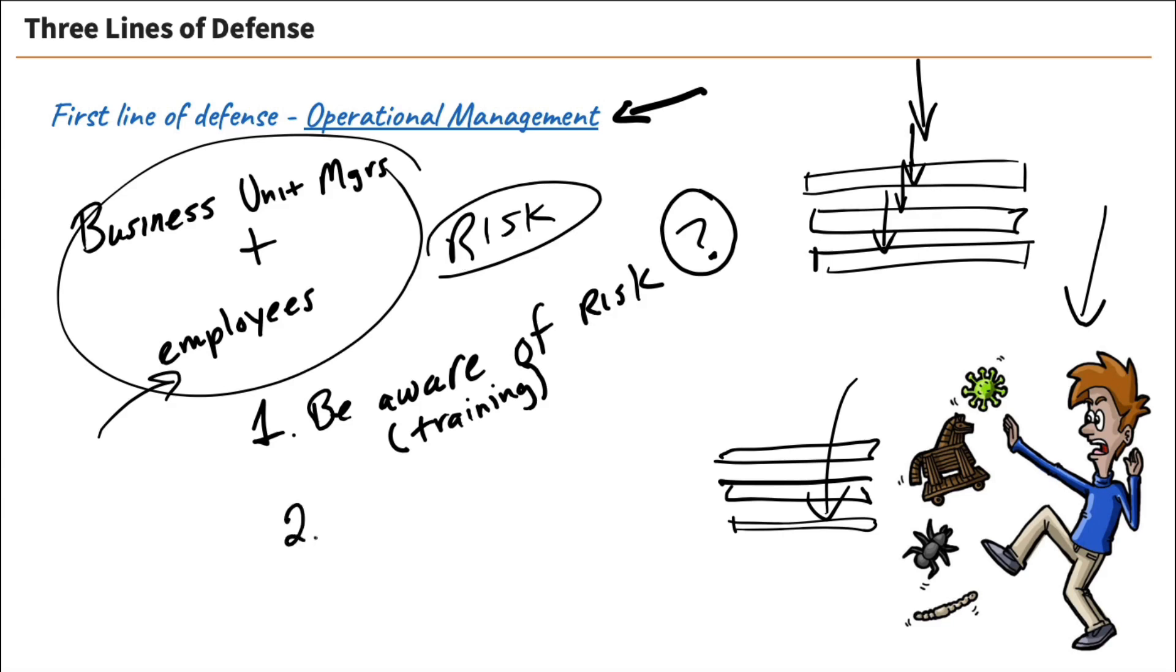The second thing they're expected to do is implement risk management policies. When we create these policies, who follows the policies? Everybody does, including the employees that are being managed. If the employees don't have a policy to follow and the training to understand what risk is, all those frontline workers are not going to be prepared to deal with risk, meaning our first line of defense is going to be weak.